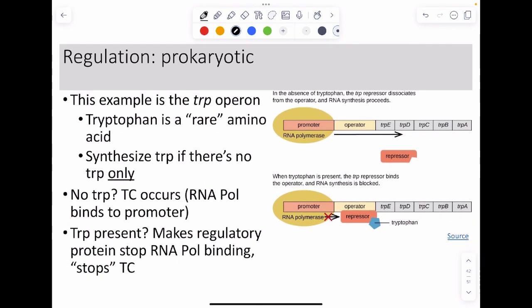This one here is what we call the TRP operon. TRP is tryptophan, but we say trip. Tryptophan is a rare amino acid, meaning good luck eating it. What bacteria will do is they will synthesize tryptophan only if there's no tryptophan.